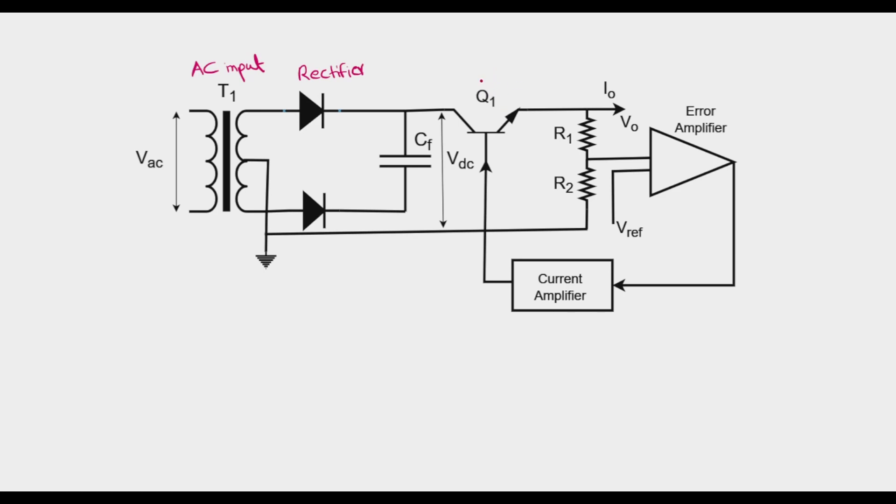Then we have this series pass element, the transistor Q1, which is operating in the active or non-switching mode. This output voltage is passed through a feedback loop. By varying the resistance between VDC and V0, where V0 is the voltage at the output and VDC is what is developed through the transformer and rectifying stage, the transistor regulates the current flow and thereby keeps the output voltage constant.